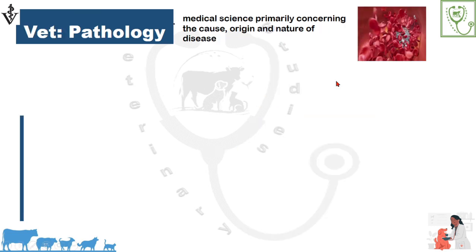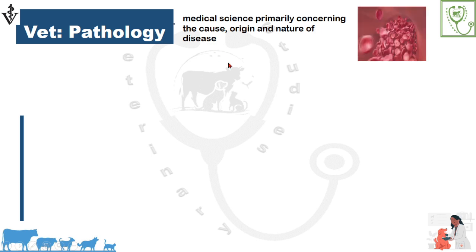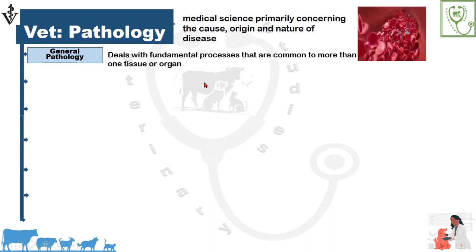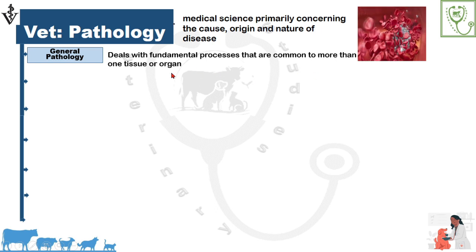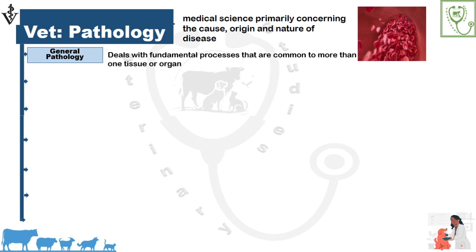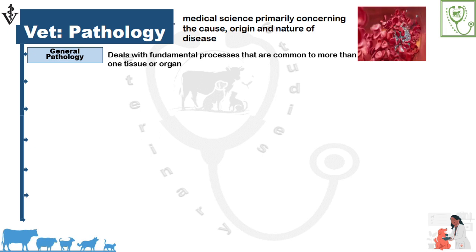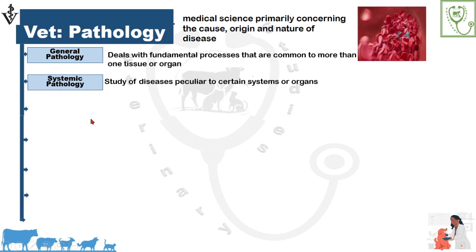Veterinary pathology is a science in which we study about the cause, origin, and nature of disease. It includes general pathology, in which we study about the fundamental processes that are common to more than one tissue or organ. For example, inflammation — in which there is a rushing of WBCs and RBCs to the site of inflammation — is one such process studied in general pathology.